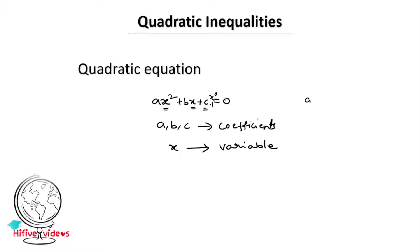At the same time, if we have bx plus c equal to 0, we have a linear equation — we have x to the power of 1. Now, in a quadratic inequality, in place of the equal to sign, there is an inequality sign.